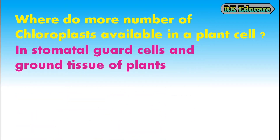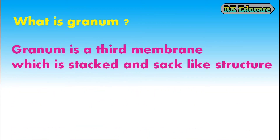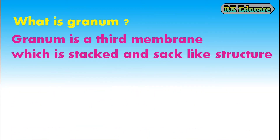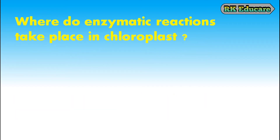Where are more chloroplasts available in a plant cell? More chloroplasts are available in stomatal guard cells and ground tissue of the plants. How many membranes are there in chloroplasts? There are three membranes in chloroplasts. What is granum? Granum is a third membrane which is a stacked and cyclic structure. What is stroma? Stroma is an intermediate fluid present in chloroplasts. Enzymatic reactions take place in the stroma of the chloroplasts.